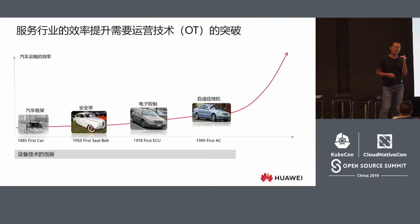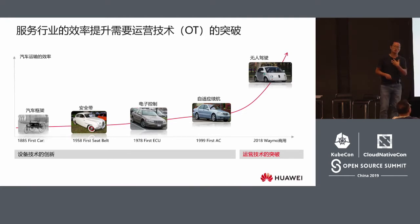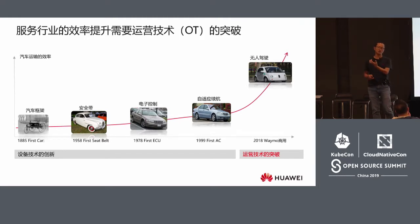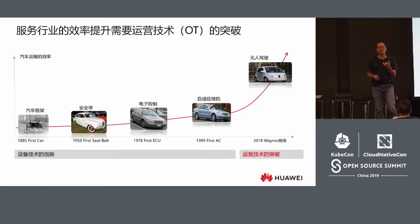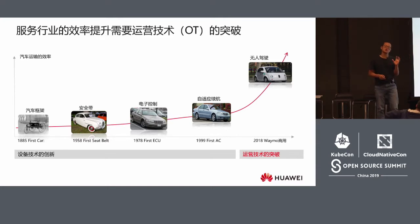For a long time, operational technology developed very slowly for Huawei and other device providers. In the past, we developed very fast in terms of 1G and 4G. But for operators starting a business — for example, when you use Wi-Fi at home — you still need to ask the service provider to come to your home.